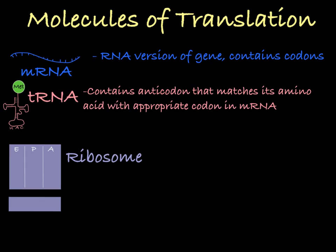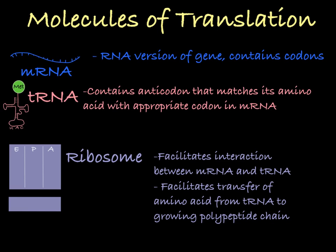A ribosome is the final component of this process. It facilitates the interaction between the anticodon of the transfer RNA with each codon of the messenger RNA. It also facilitates the transfer of the amino acid from the tRNA molecule onto the growing polypeptide chain. The ribosome has two subunits, the large and the small subunit, which attach to the mRNA independently, but then work together to facilitate the interaction between mRNA and tRNA.